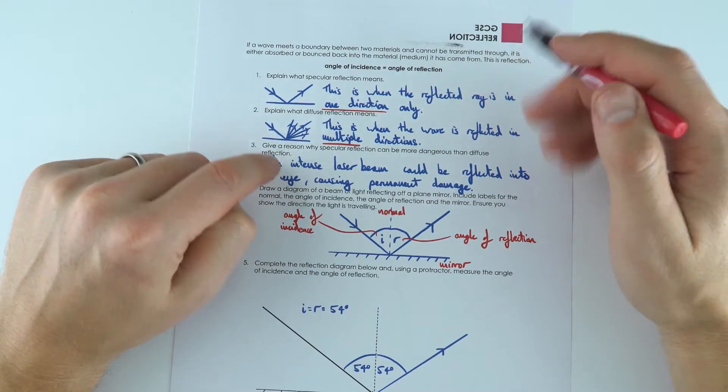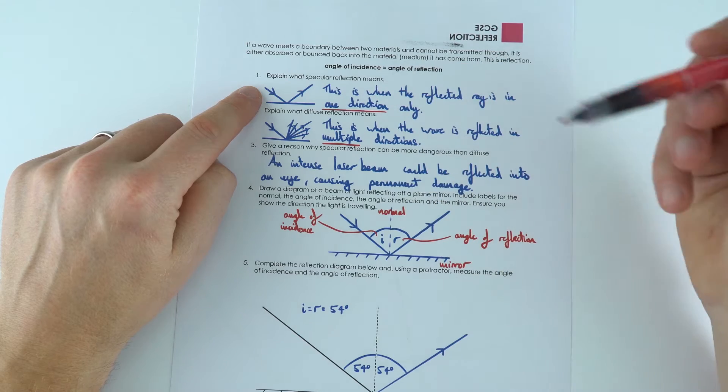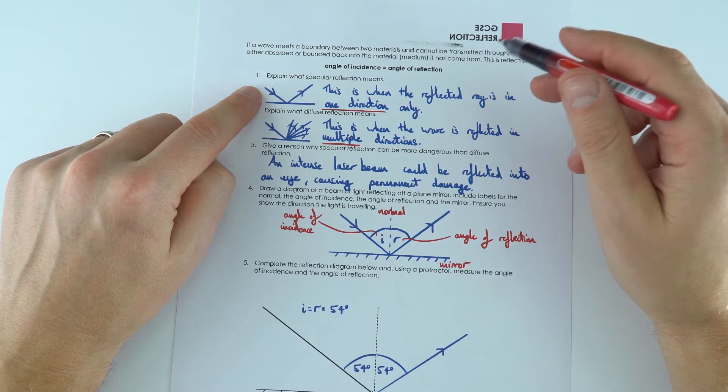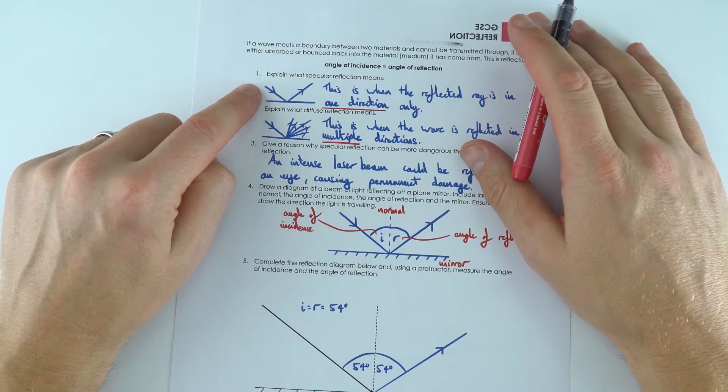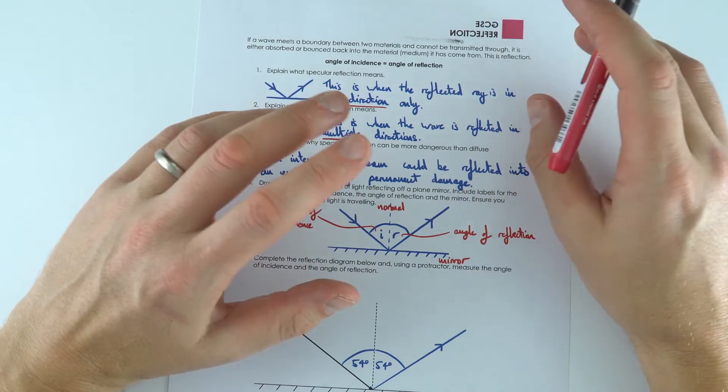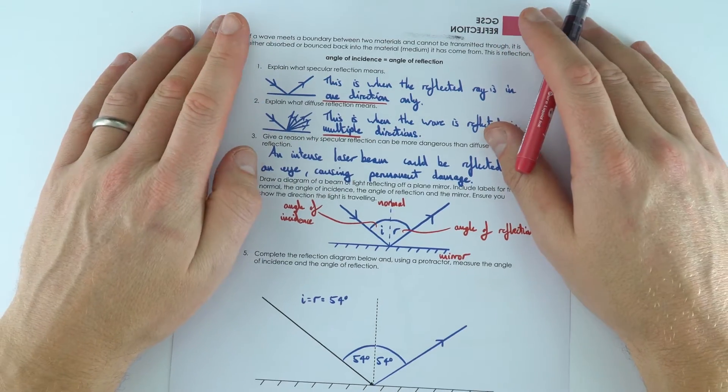The danger of this specular reflection is if you had a really intense light source, perhaps a laser beam, that means it can be reflected off a surface and into your eye causing permanent damage. This is why lasers, even the ones in a small laser pointer or pen, can actually be quite dangerous to your eyes.